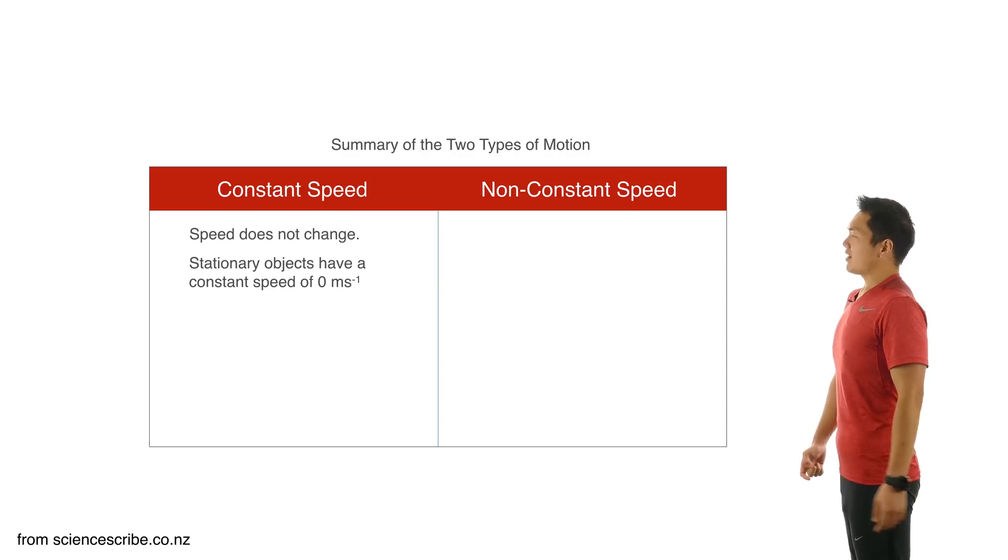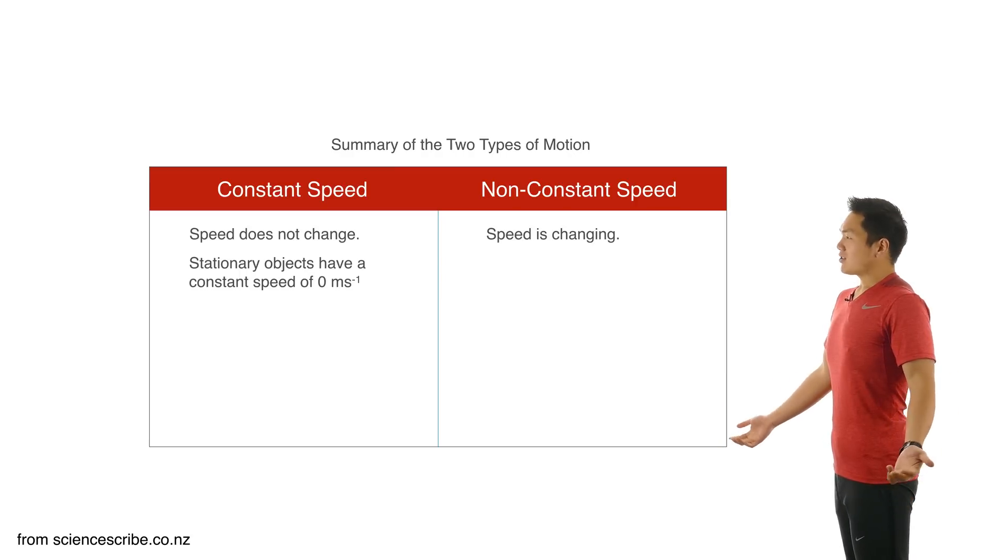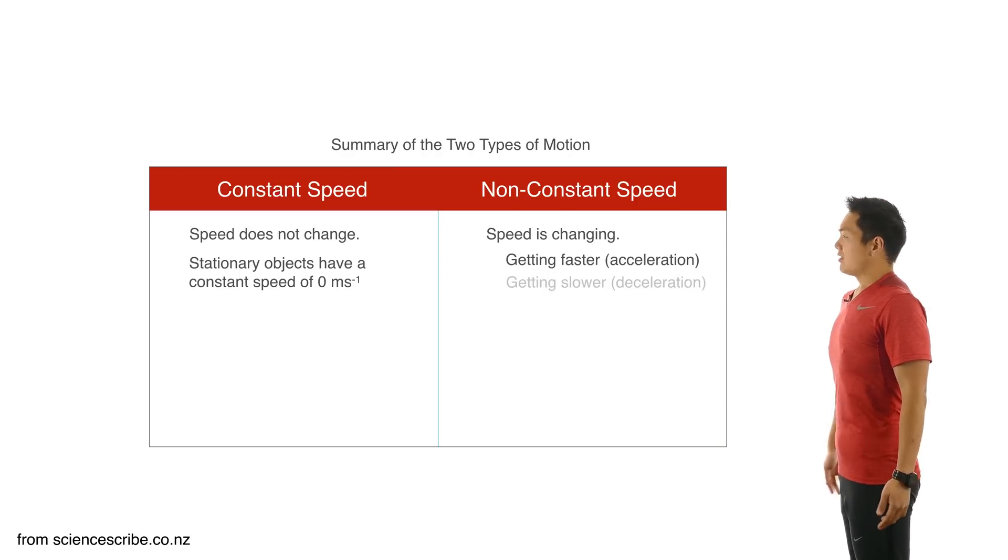Over on the other side of the table, for non-constant speed, this is when the speed is changing. So if the speed is changing, it could be going up, so accelerating, or going down, so decelerating.